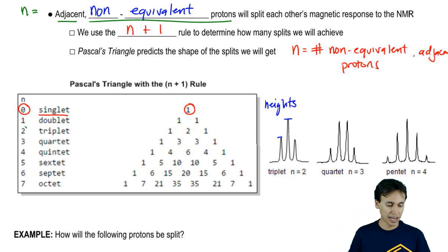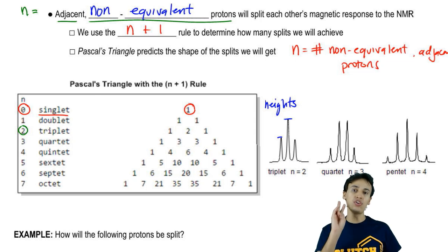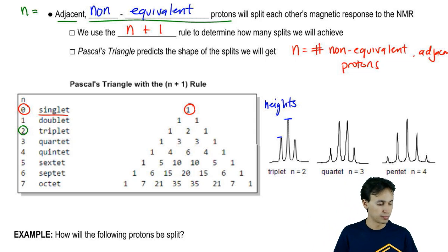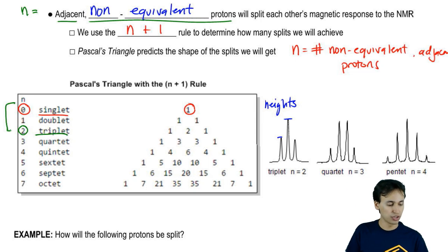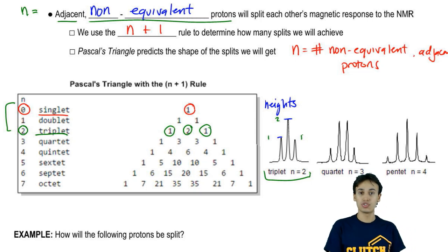Now let's look at a more complicated example. Let's say that n in your example is actually equal to 2. So that means that you have two non-equivalent adjacent protons next to your target proton. That's going to be called a triplet. And what a triplet predicts according to Pascal's triangle is that since we're on the third level of the triangle, you're going to get a single split of size 1, a second split of size 2, and a third split again of size 1. That's exactly what is represented right here. Notice that I basically have a 1, 2, 1 pattern.